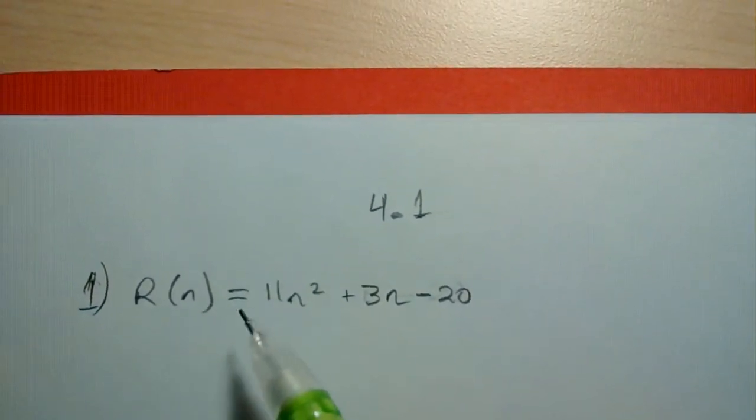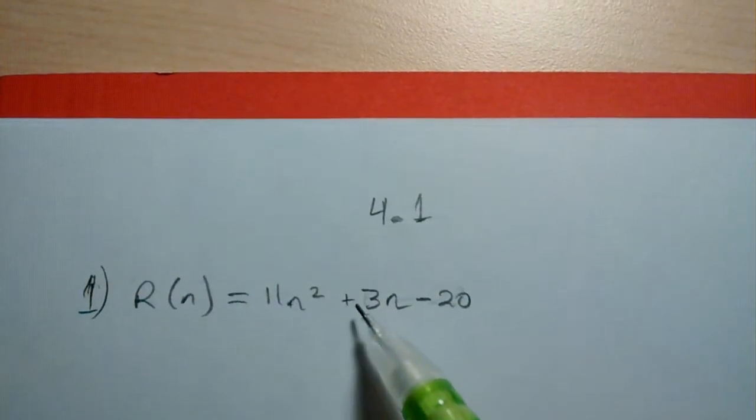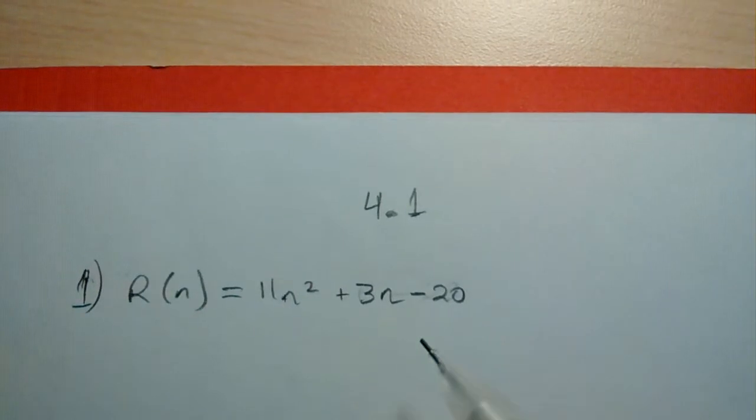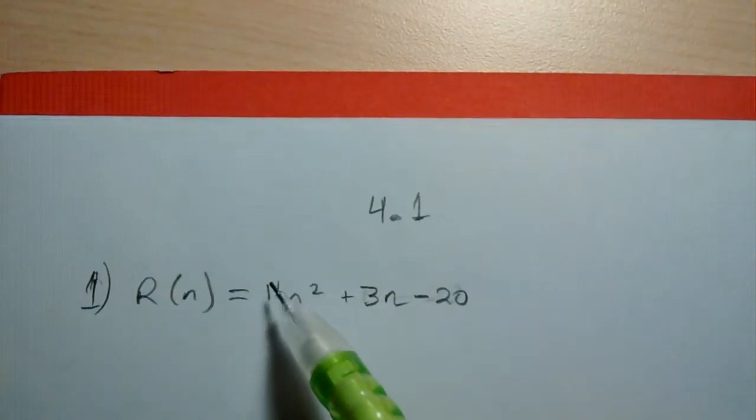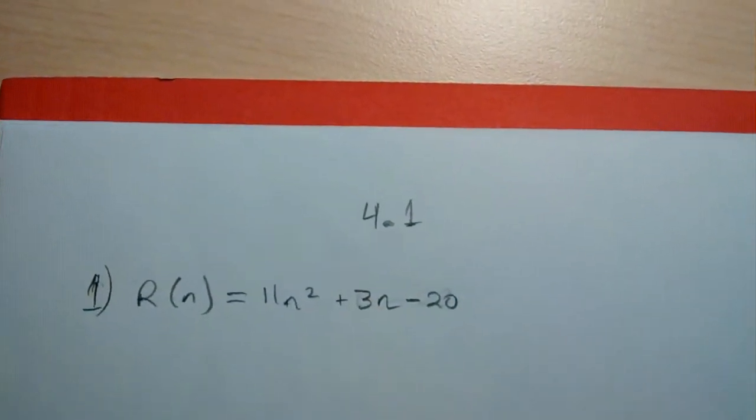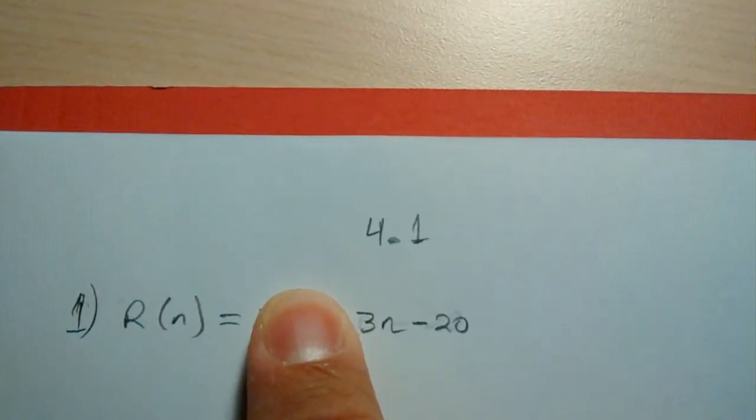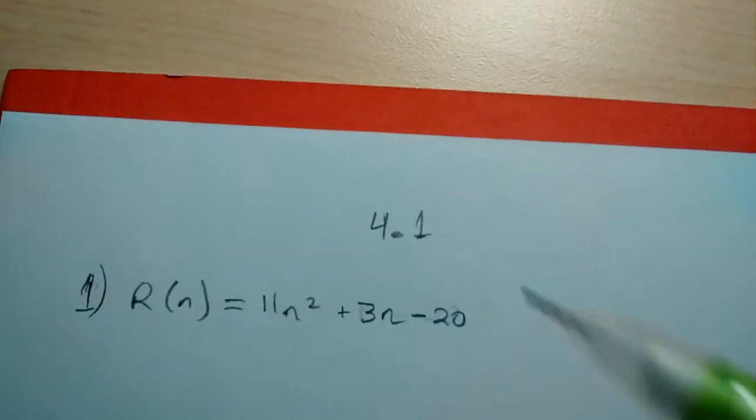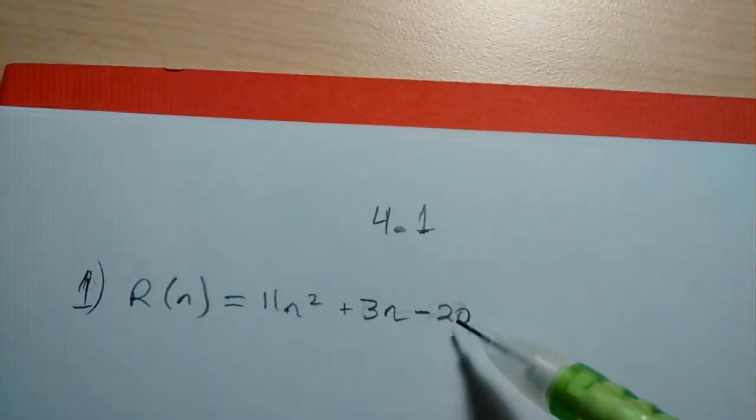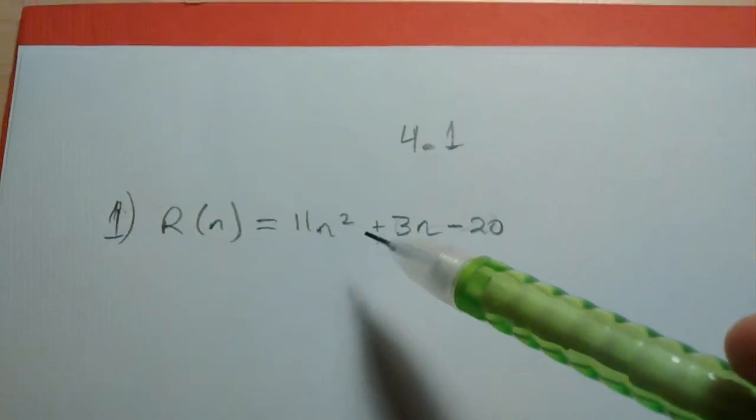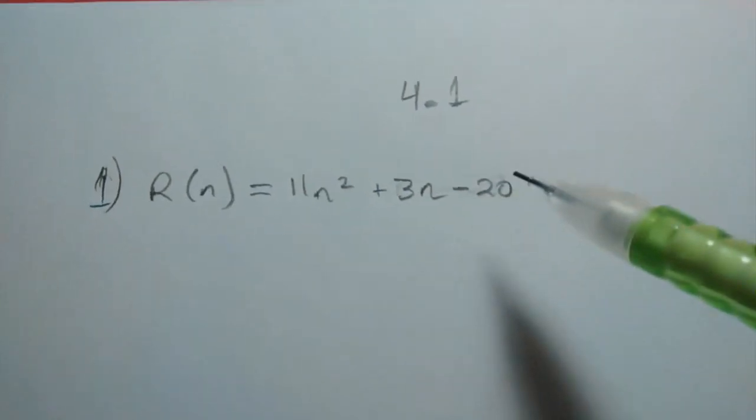This is r of n equals 11n squared plus 3n minus 20. And the reason why it's non-linear is because of this term right here. If this term was not present, that would be a linear function with the slope being 3 and the vertical intercept negative 20. But because of this addition of this other term, the graph of this function is not linear.